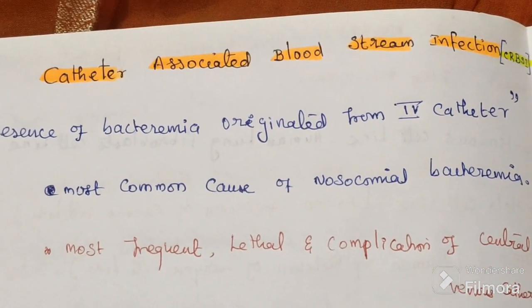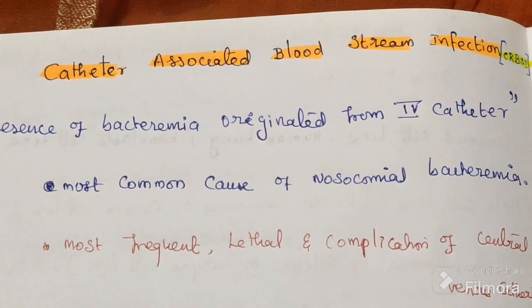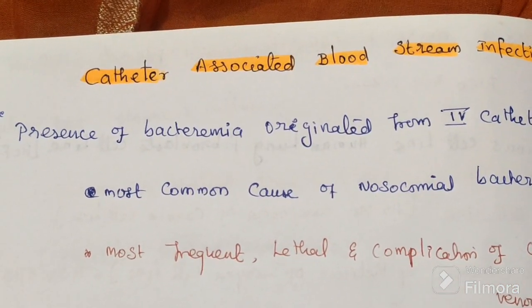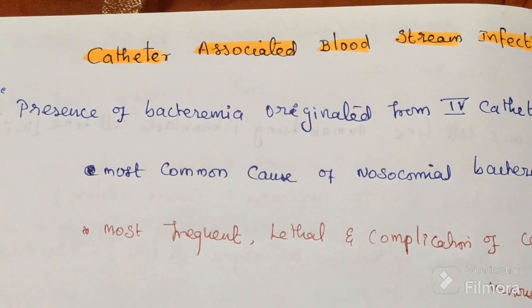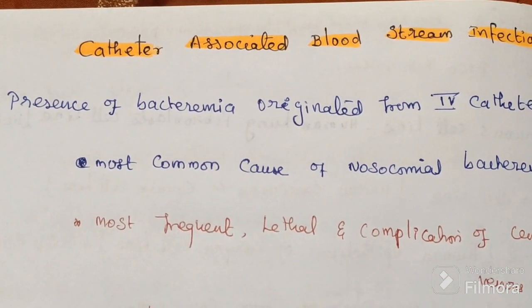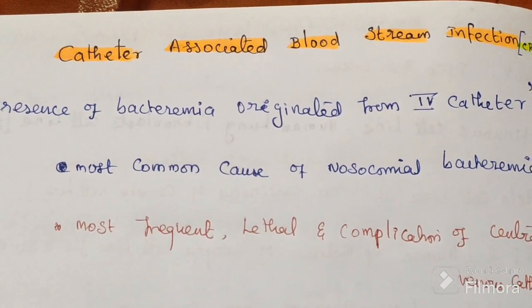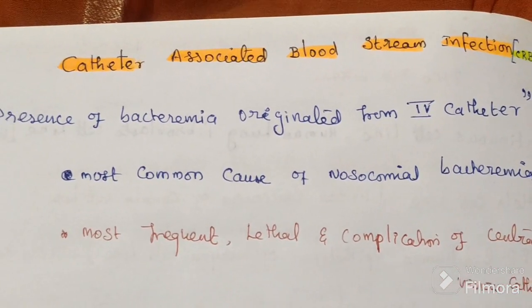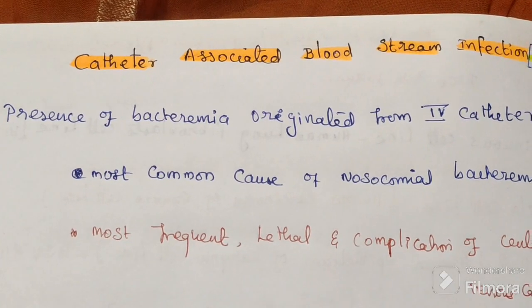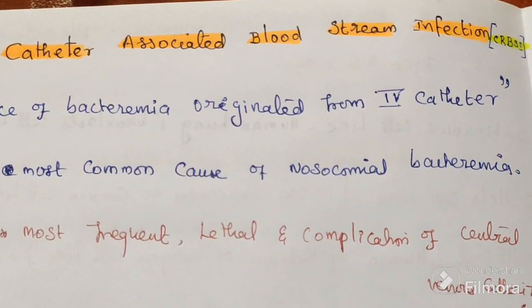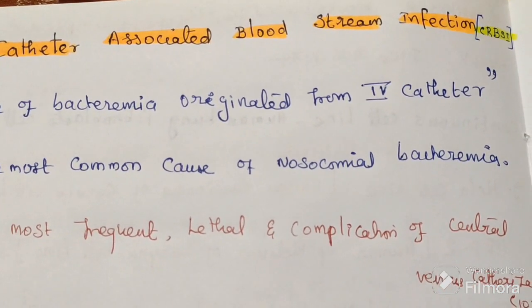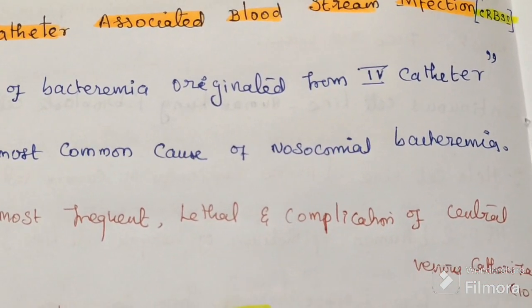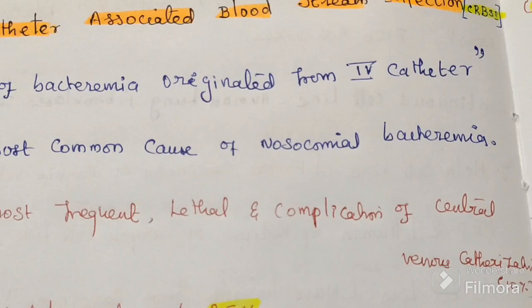In this video, we will discuss catheter-associated bloodstream infection. It is defined as the presence of bacteremia originated from an intravenous catheter, and it is the most common cause of nosocomial bacteremia.